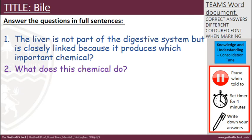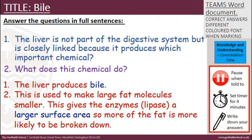The liver is closely linked to the digestive system because it produces bile. Remember to always answer in full sentences. What does bile do? It is used to make large fat molecules smaller. This gives the enzymes — remember to name the enzyme: lipase — a large surface area so more of the fat is more likely to be broken down. And if you added that it speeds up digestion, excellent, well done. You can pause now, make your corrections to the Teams Word document in a different colour, and then unpause when you're ready.